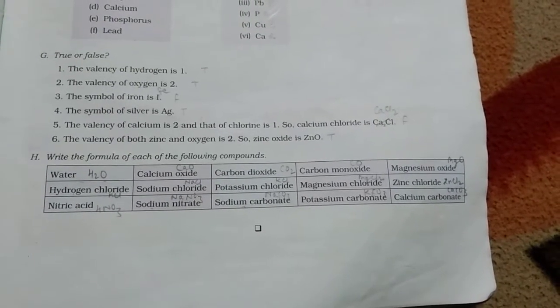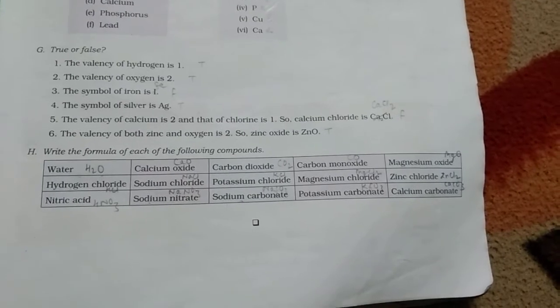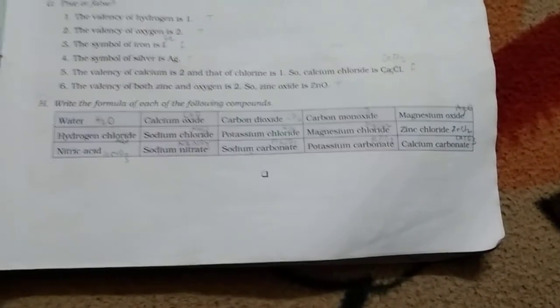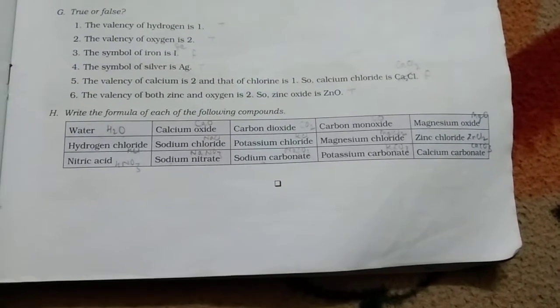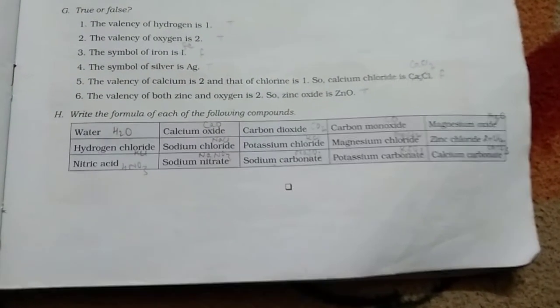Next, the valency of both zinc and oxygen is 2. So, zinc oxide is ZnO. True. Now, question number H. Children, you will write the formula of these compounds. Formula of water is H2O. Calcium oxide, CaO.